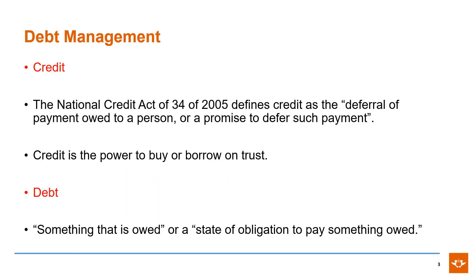With regards to Debt Management, one should distinguish between Credit and Debt. Credit is defined according to the National Credit Act as the deferral of payment owed to a person, or a promise to defer such payment. In other words, credit is the power to buy or borrow on trust. Debt is something that is actually owed, or a state of obligation to pay something that is owed.